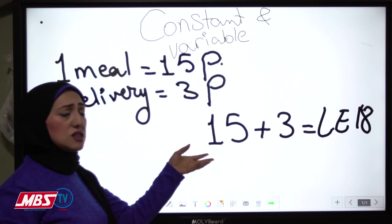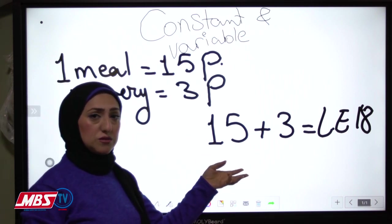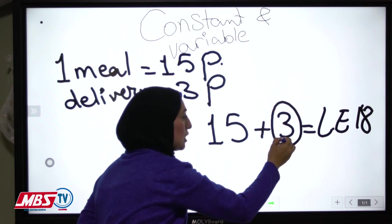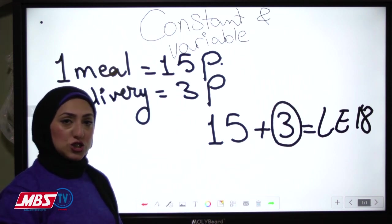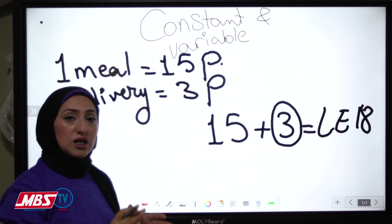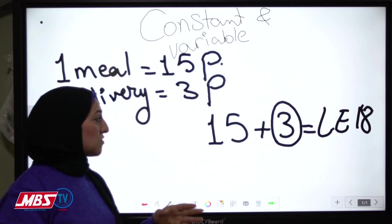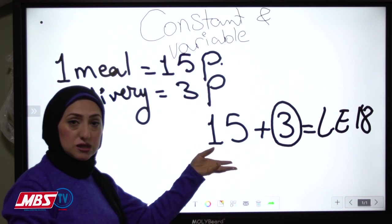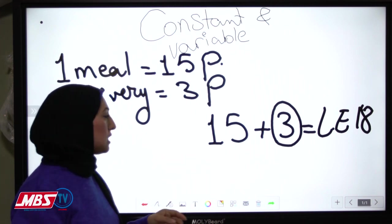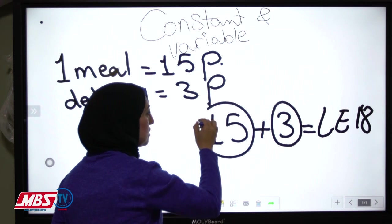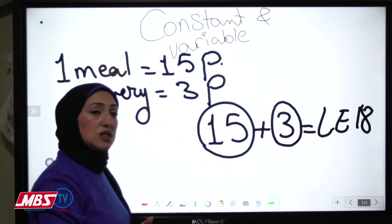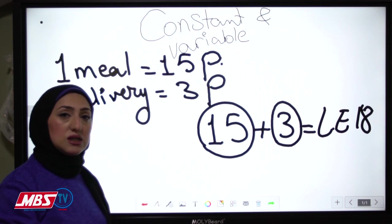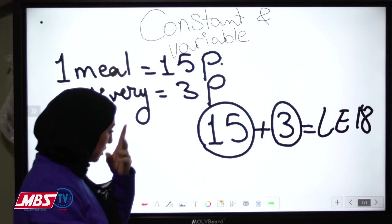What is constant here and what is variable? The constant here is 3, because it doesn't change — you will pay these 3 pounds whether you take one meal or ten meals. And this 15 is variable, it changes according to how many meals you order.